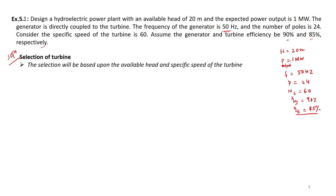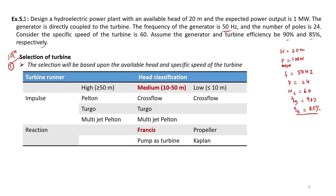Before designing, let us go for selection of the turbine. The selection will be based upon the available head and specific speed. If we classify with respect to head: high head is more than 50 meters, medium head is 10 to 15 meters, and low head is less than 10 meters. In our case, the head is 20 meters, so it falls under medium head.